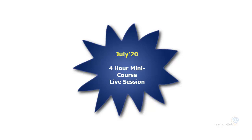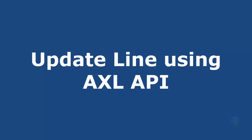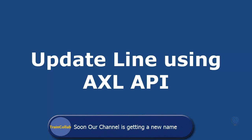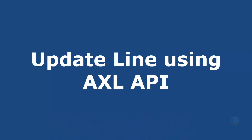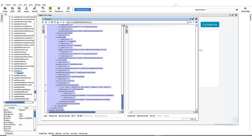Let's get started for today's session which is on DevOps. First, let's talk about how you modify an object — for example, if you would like to modify the directory number. I'll go to SOAP UI, which I have already opened. If you don't know how to access these requests, see my previous videos to get an overview.